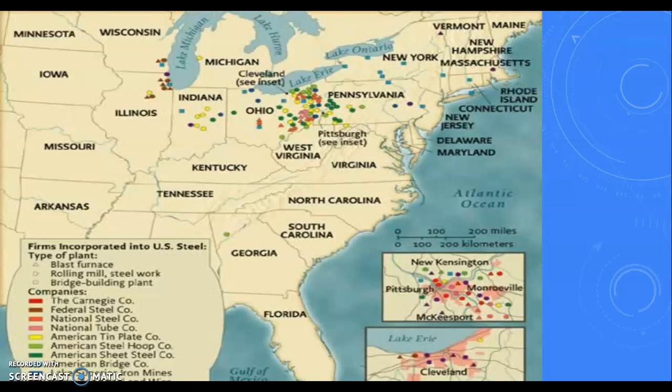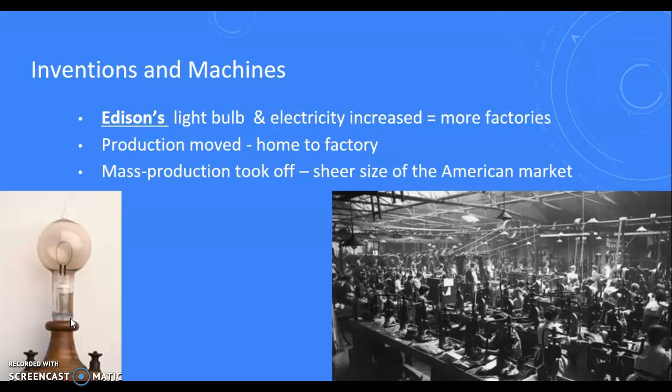Looking at where steel is found, you'll see a lot of it in western Pennsylvania and eastern Ohio — known as the Rust Belt. And if you're into football, that's why you have the Steelers in Pennsylvania. You're also going to have the rise of inventions, in particular Edison's light bulb and electricity. With more electricity, you can now run more factories, and it means not just working during daylight hours — you can work overnight as well. Production is also going to be moved away from the home — known as the cottage system — to factories, and once you introduce machines you're going to have mass production that will really take off.